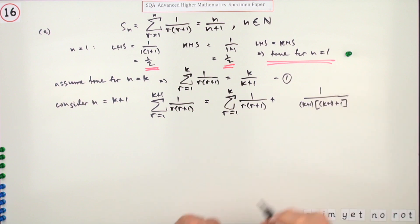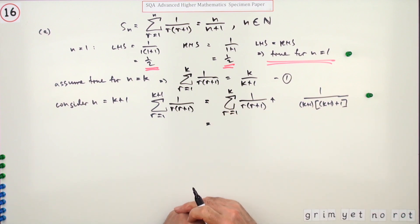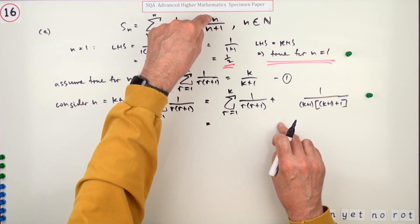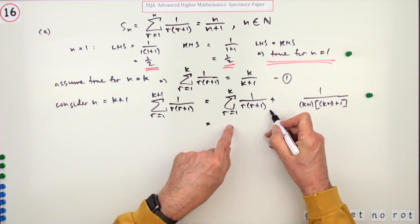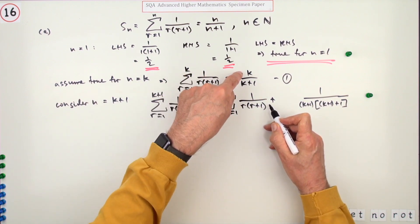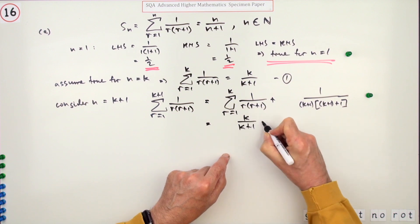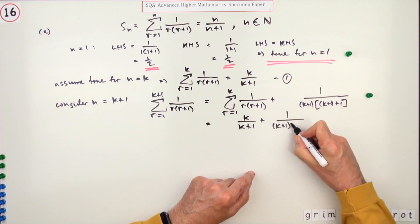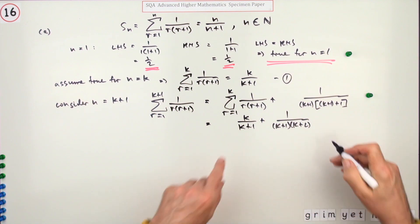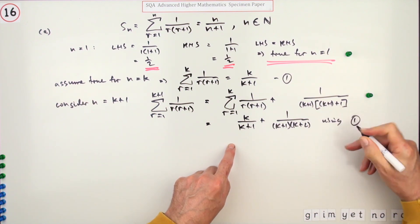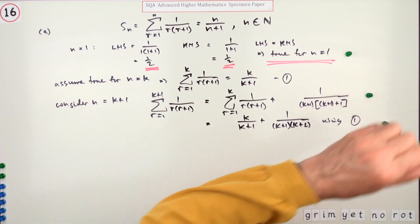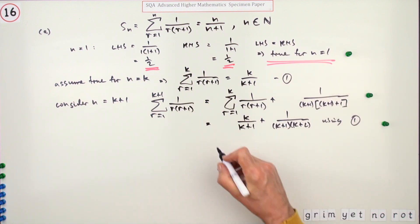Those two parts together give you the next mark. Now you're on your own — you have to tidy this up. You know what you're aiming for: the expression should look like k+1 over k+2. So you call in the inductive hypothesis, replacing the sum of the first k terms with k over k+1 — using equation (1) — and then add on 1 over (k+1)(k+2). Getting the ball rolling there gives you the third mark.